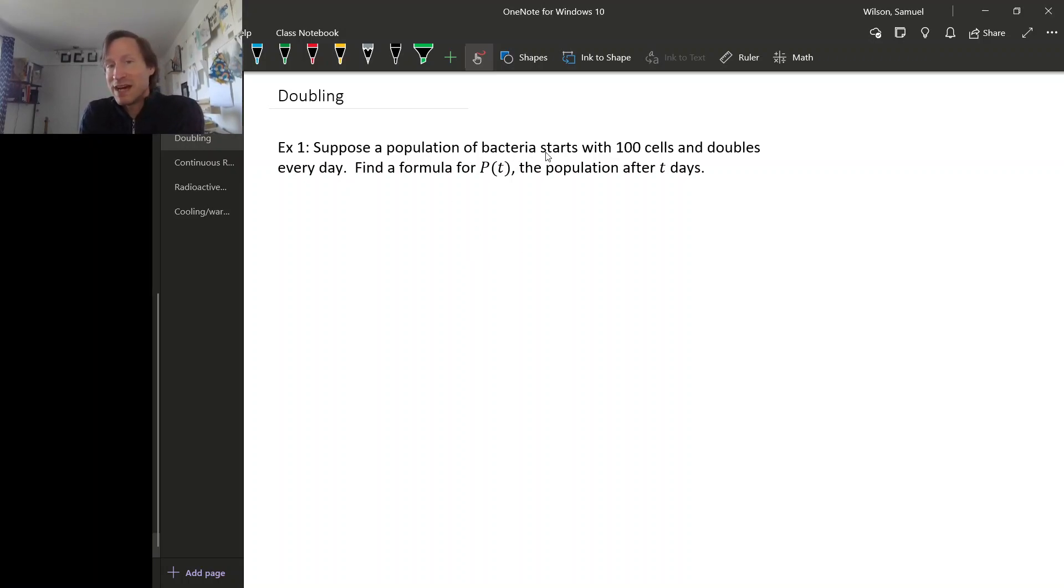For example, suppose we have a population of bacteria that starts with a hundred cells and doubles every day. So let's find a formula for the population of this colony of bacteria after t days.